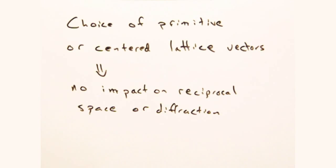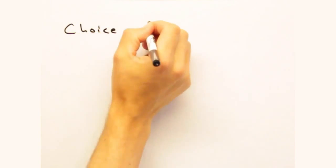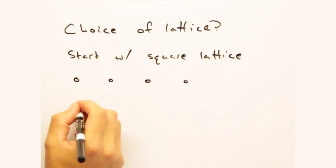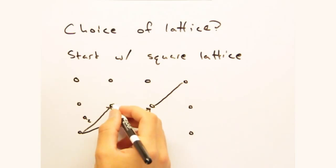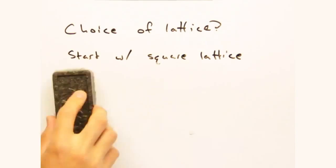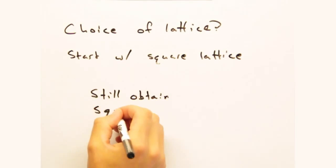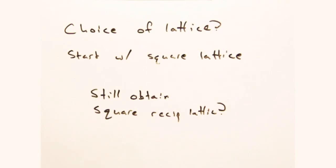Hmm, I wonder if this is also true for choice of lattice. If you start with a square lattice in real space, but pick primitive oblique lattice vectors, does it create a square lattice in reciprocal space? Ooh, that's a good question. We'll leave it for you guys to deal with.